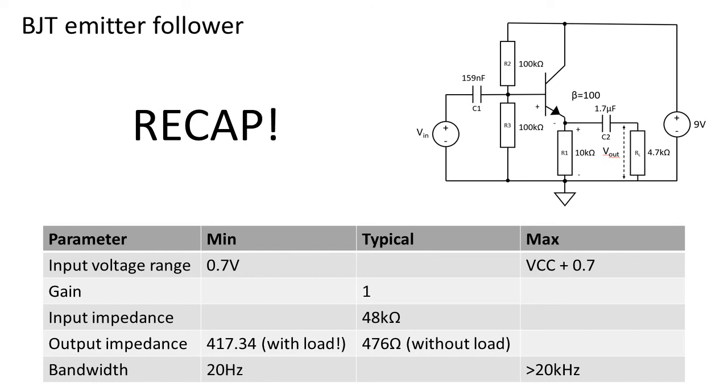The input impedance is about 48k ohms and the output impedance is 417 ohms with load and 476 without. As we designed the circuit to have an approximate bandwidth starting at 20 hertz. But we didn't add any low pass filtering, so the circuit will buffer signals outside the audio spectrum too.